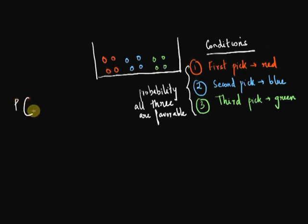So now if I want to find a probability that pick 1 is red, pick 2 is blue and pick 3 is green. In other words, the probability that all these three outcomes are favorable.